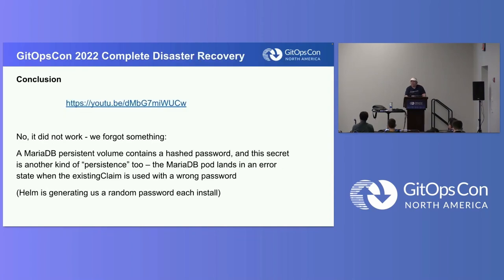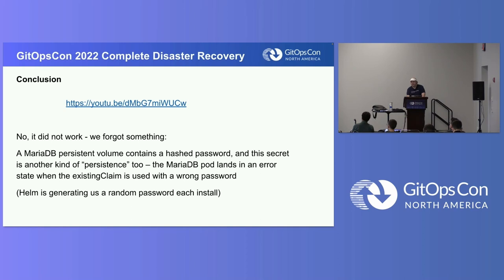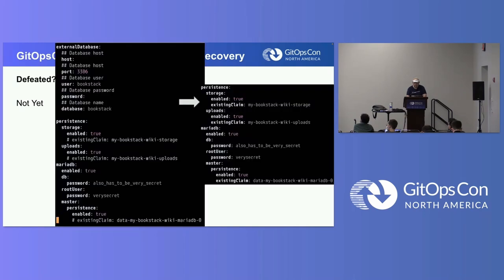Why did this not work? The database password no longer matches what we have in the database itself. Helm is generating a random password for each install. The first time MariaDB runs, it actually records that information in the database, and if it doesn't match again later, MariaDB won't start. So if you're following along at home now, it's starting to heat up.